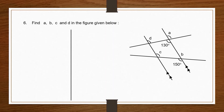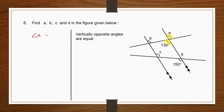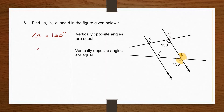Question 6: find A, B, C and D in the figure given below. Angle A and 130 degrees are vertically opposite angles, and vertically opposite angles are equal, therefore angle A equals 130 degrees. Angle B and 150 degrees are vertically opposite angles, therefore angle B is equal to 150 degrees.